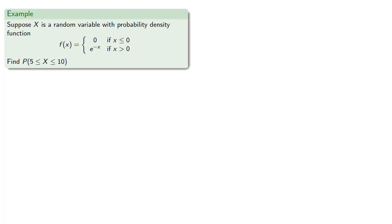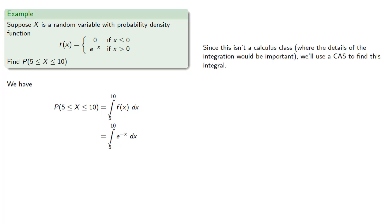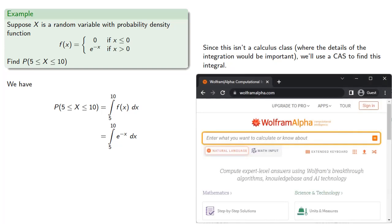As a quick example, suppose x is a random variable with a given probability density function. We can compute the probability that x is between 5 and 10, which is the integral from 5 to 10 of f of x dx. Since x is greater than 0, we use the formula e to the negative x. Since this isn't a calculus class where integration details are important, we leave the computation to a computer algebra system.